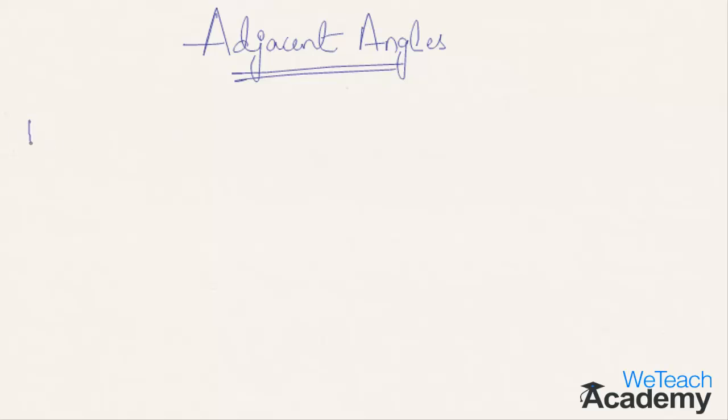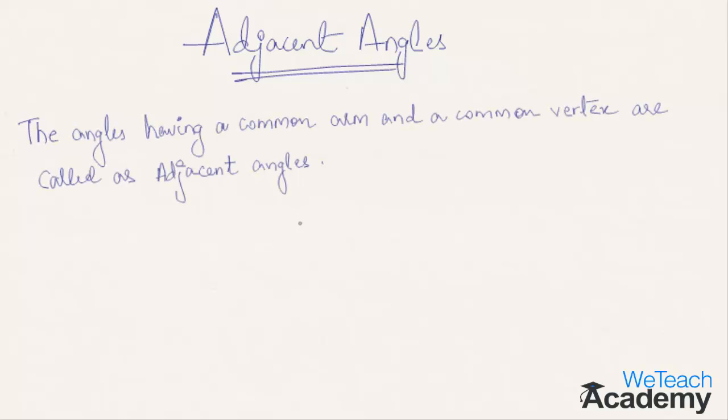What are adjacent angles? The angles having a common arm and a common vertex are called adjacent angles. Let me explain with the help of a diagram.